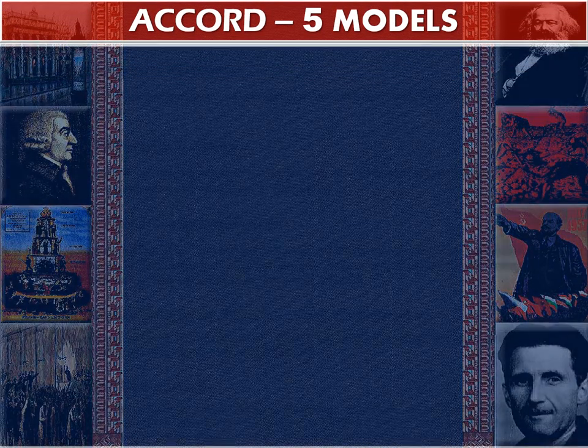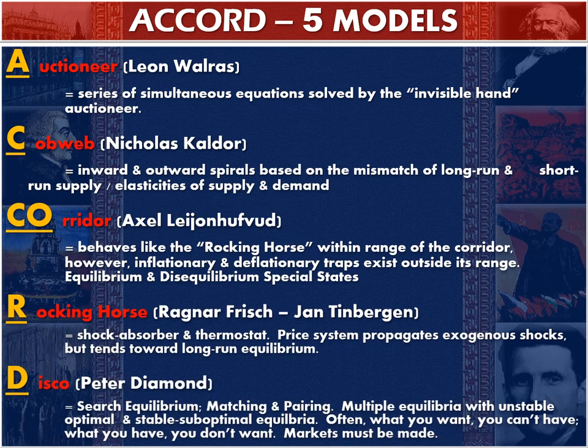Let's talk about the five models. I'm going to throw out a lot of different names, but I won't hold you responsible for them — they're just additional information. What this is really about is a nice acronym to remember the five models: ACCORD. A stands for Auctioneer, the first C for Cobweb, CO for Corridor, R for Rocking Horse, and D for Disco. Almost all these people have been shortlisted for the Nobel Prize in economics. More or less, they were trying to think through how supply and demand happen, and they came up with exceptions that explain certain aspects of it.